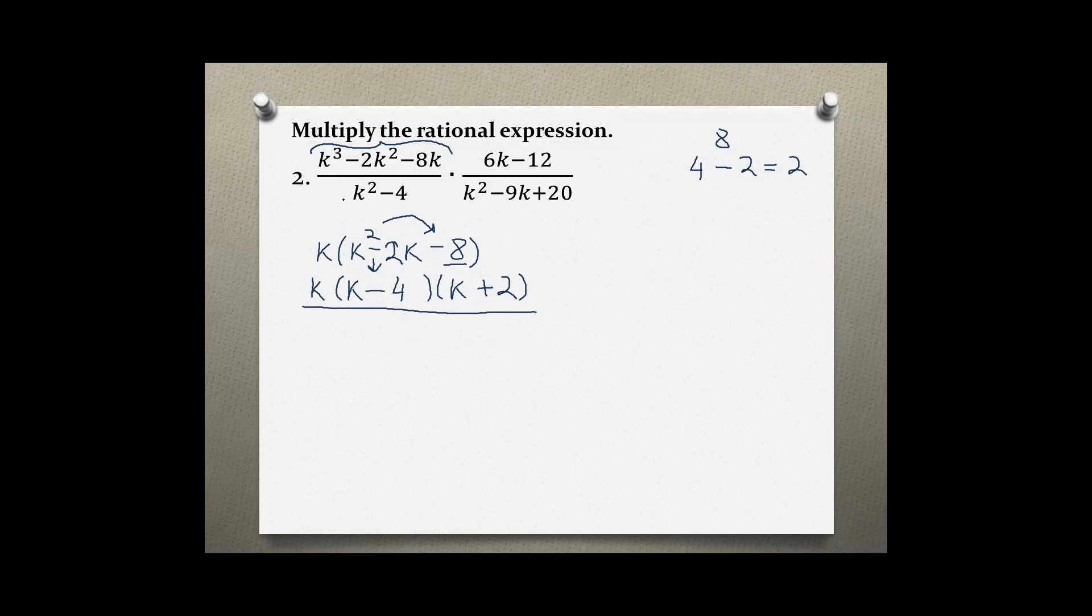Now I'm moving on to the bottom. This is also factorable—it's the difference of two perfect squares. I take the square root of k², which is k and k. I need a plus and a minus, and the square root of 4 is 2. Done with that part.